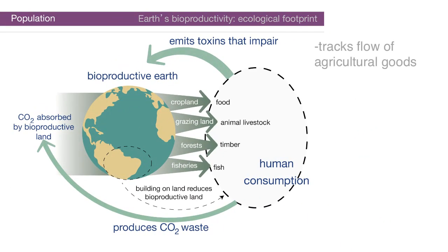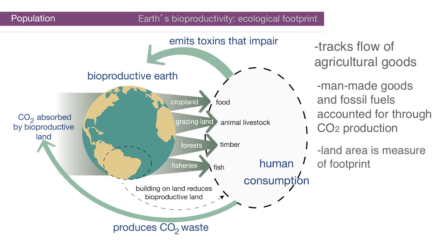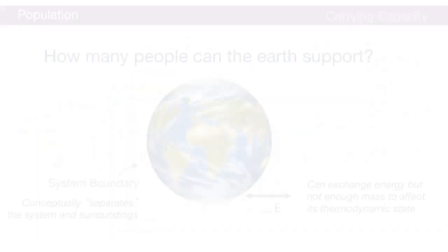The key things to know about the footprint are that it only tracks the flow of organic goods; man-made synthetic goods and fossil fuels are only considered in the computation of CO2 as waste. It uses land area to produce goods or absorb CO2 as the universal accounting measure. The ecological footprint is literally an area of bioproductive land needed to produce goods and absorb waste associated with a time frame of one year and one person.